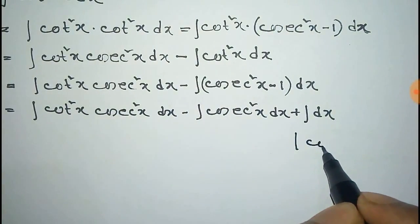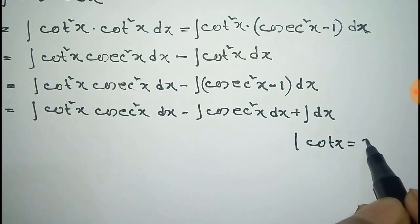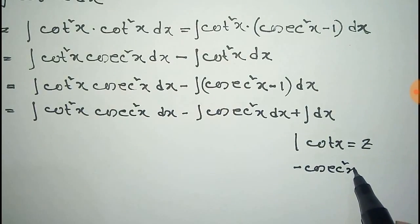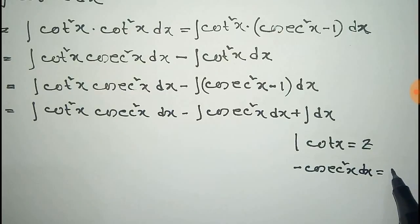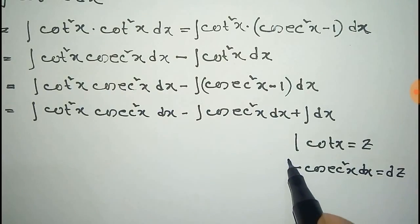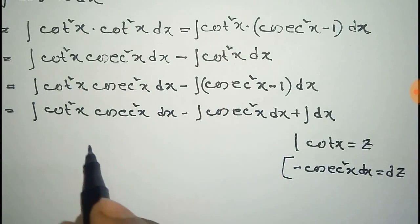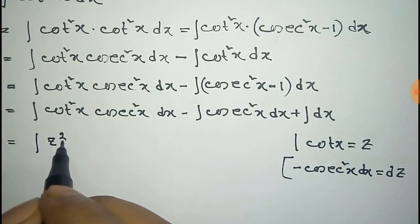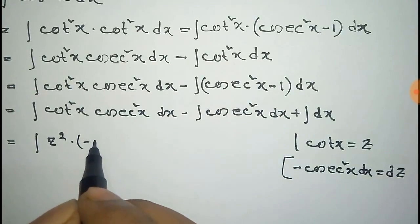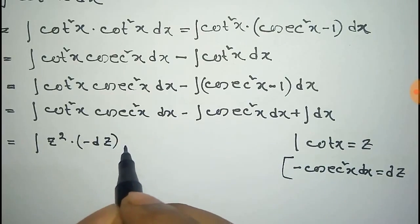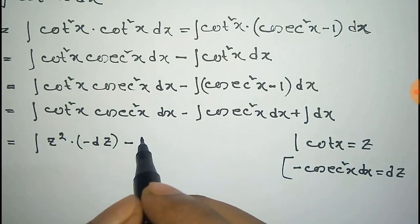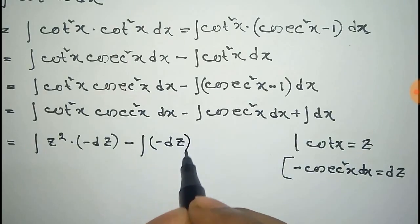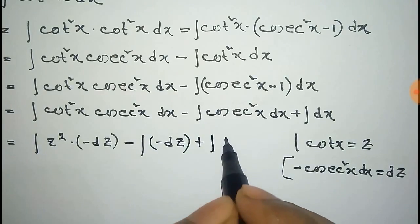Now we consider z equal to cot x. So the derivative of cot x is minus cosec square x dx equal to dz. Now we put this substitution into the integration, so it will be z square and this is minus dz, minus this is minus dz, plus integration of dx.